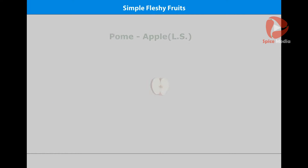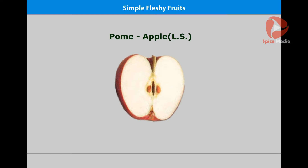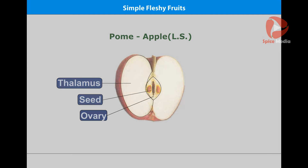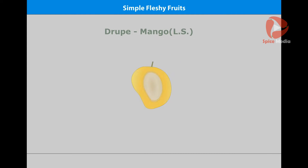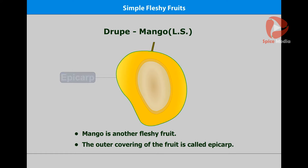Let us look at another fleshy fruit — apple. You can see the thalamus in the LS of the fruit. The seeds are enclosed inside the fruit. Mango is another fleshy fruit. The outer covering of the fruit is called the epicarp.